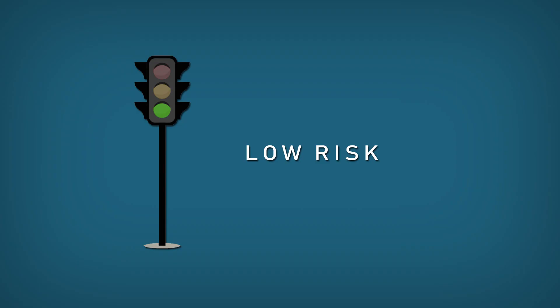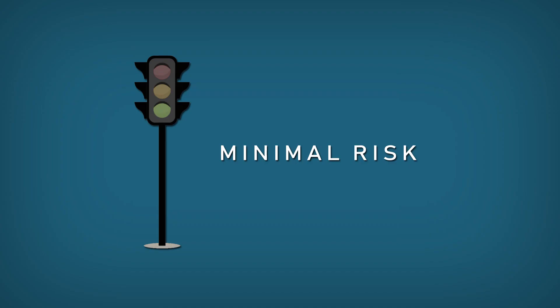A green light is used with confidential information that poses a low risk and can be shared within the larger industry or community, but should not be published in a public manner. A white or no light is used with information that poses a minimal risk and can be widely published or discussed, subject to standard copyright laws.